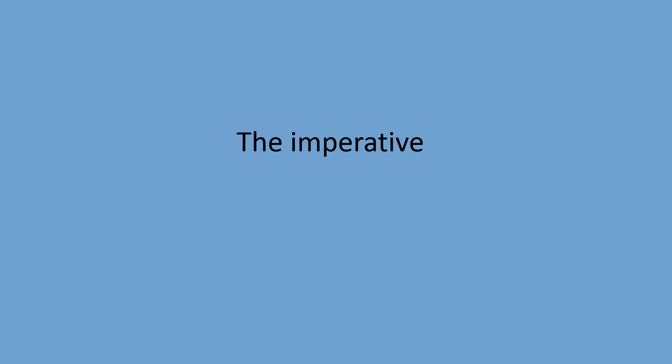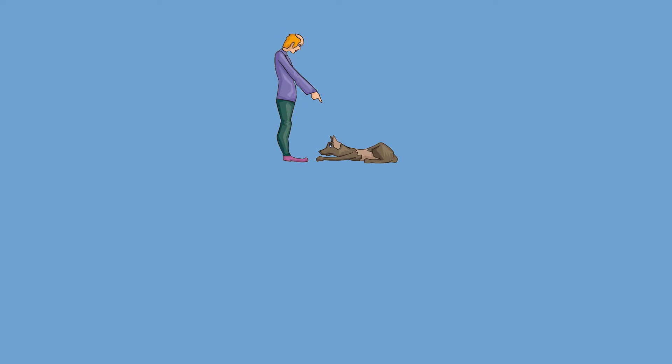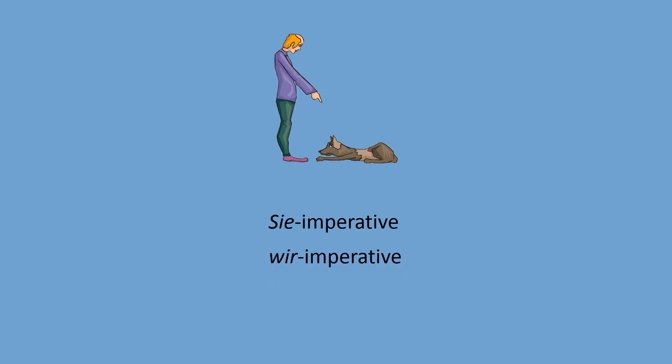Unlike English, in German we have many different imperative forms and we have to be clear about why we have so many forms and in which situation we use each one. In German we have four different imperative forms: the Sie-imperative, the wir-imperative, the ihr-imperative, and the du-imperative.